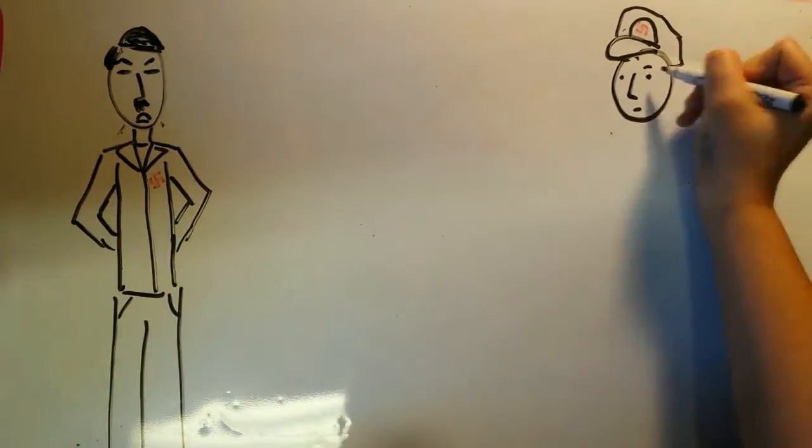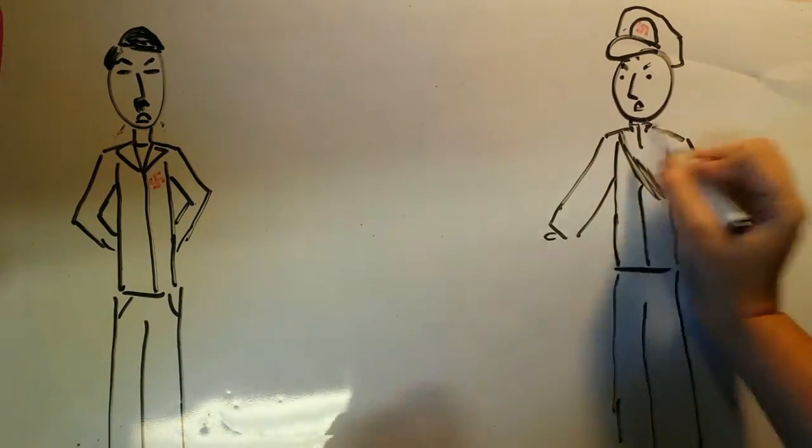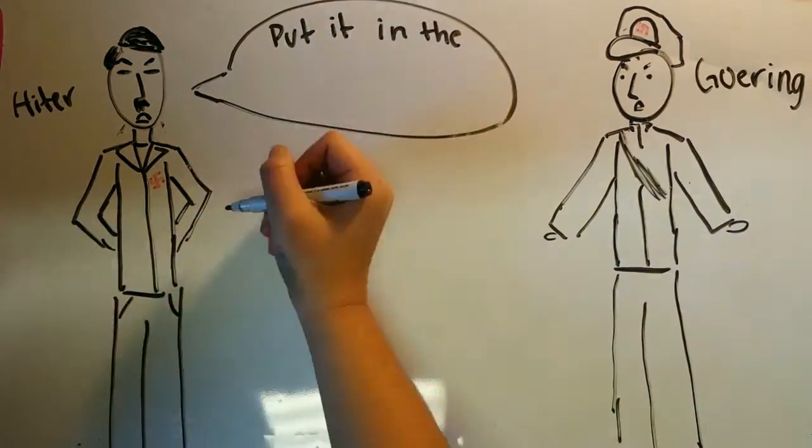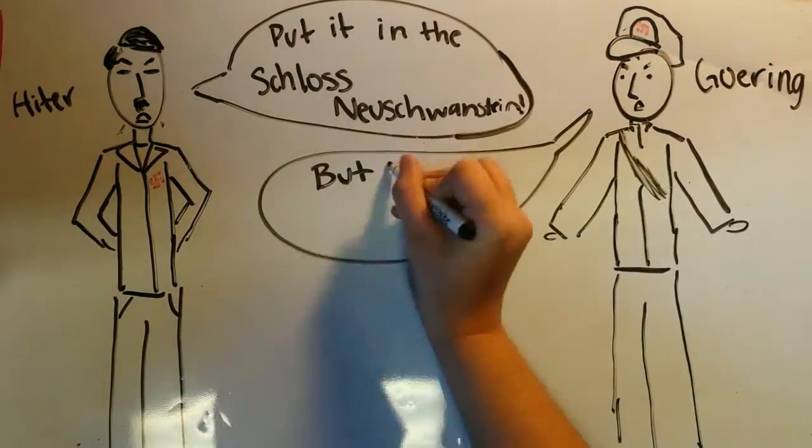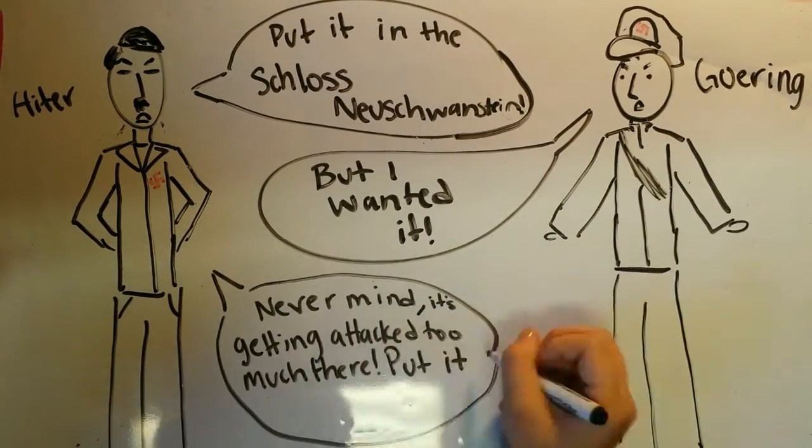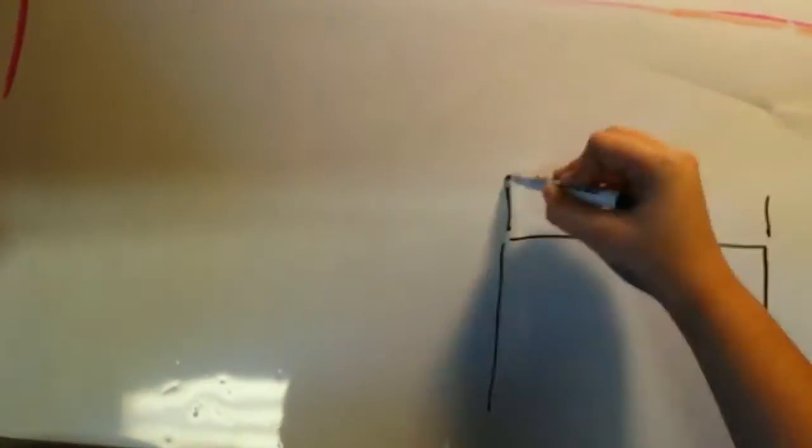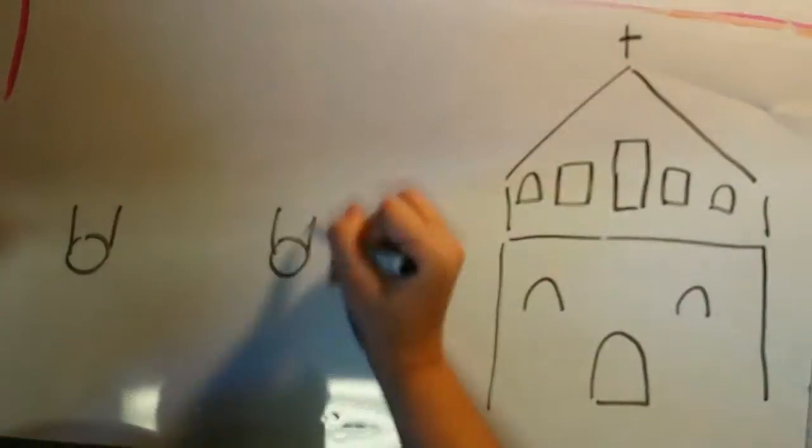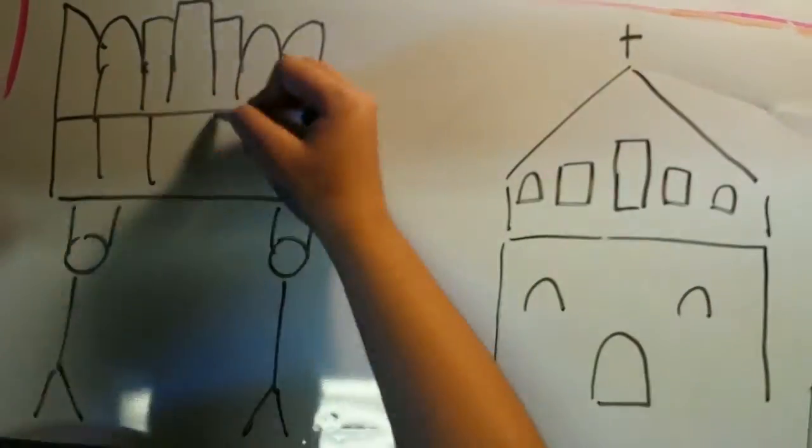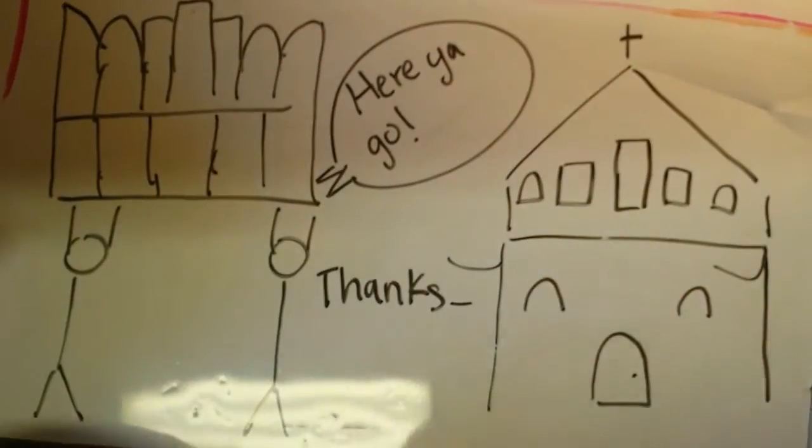During World War II, it was sought after by both Hitler and Göring. It was stored in the Schloss Neuschwanstein after Hitler ordered the painting to be seized. After numerous attacks to the castle, the painting was moved to the Altaussee salt mine. After the painting was rescued by the Monuments Men, it was returned to the St. Bavo Cathedral in Ghent, Belgium.